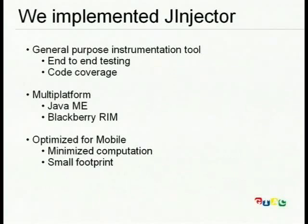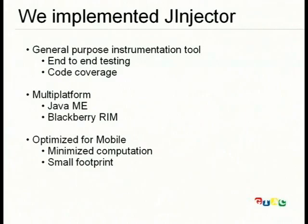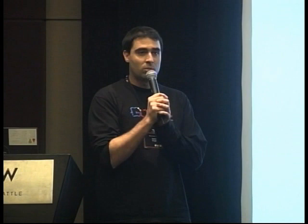We found that bytecode instrumentation was the right direction to explore, and we ended up implementing our instrumentation tool J-Injector, following three base principles. First, we wanted the tool to be general purpose — the instrumentation is general purpose and then we instrument the features we want. Today we're showing end-to-end testing and code coverage, but we have other features. Second, we wanted it to be multi-platform: we support Java Micro Edition and BlackBerry RIM, and also applied the Injector to Android. Third, and most importantly, we want the instrumented version to be optimized for mobile — minimizing computation and reducing footprint since this code runs on memory-constrained devices.